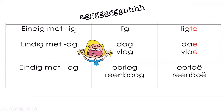Now whenever we see the G, I want you to think - look at this picture of a girl wanting to pull her hair out. Ach, alweer die G! Whenever we see the G, there's going to be issues. As iets eindig met UG - so it's 'lug' or 'plug' - we are going to add TE, not just an E. Lug word lugte. Plug word plugte. As iets eindig met ACH - so it's 'dag' - we take away the G and add E. Dag word dae. Vlag word vlae.